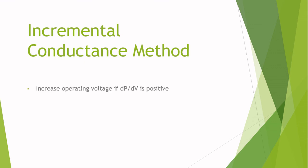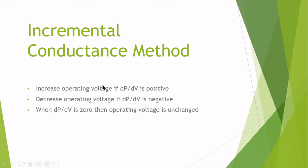In this method, increase the operational voltage if the derivative of power with respect to voltage is positive and decrease the operating voltage if the derivative of power with respect to voltage is negative. The curve can have maximum operating point when the rate of change of power with respect to voltage is zero.